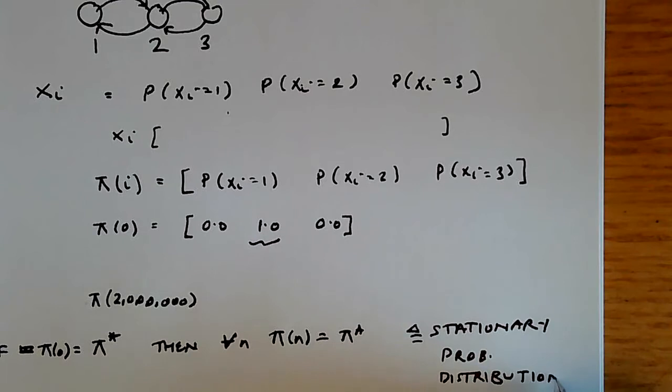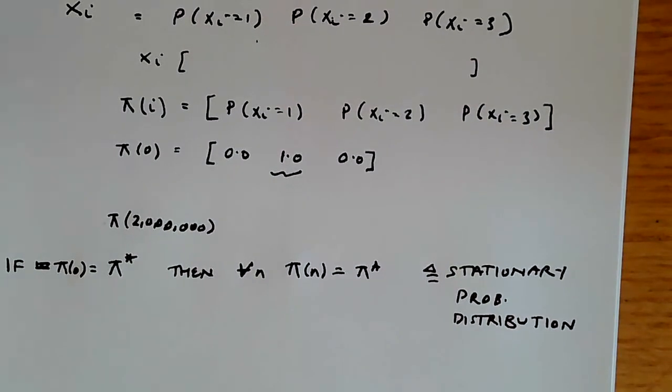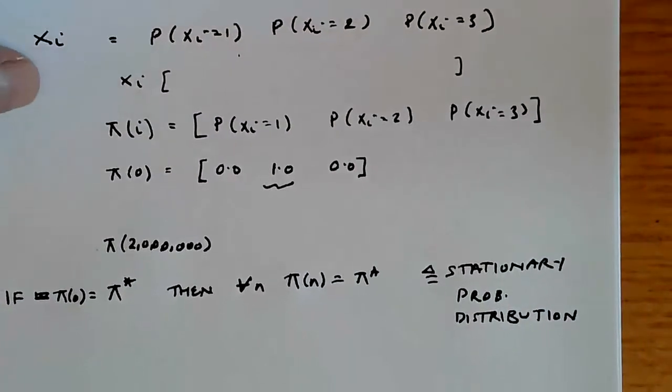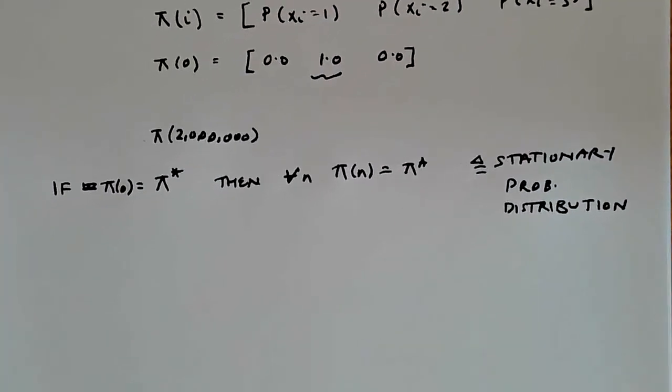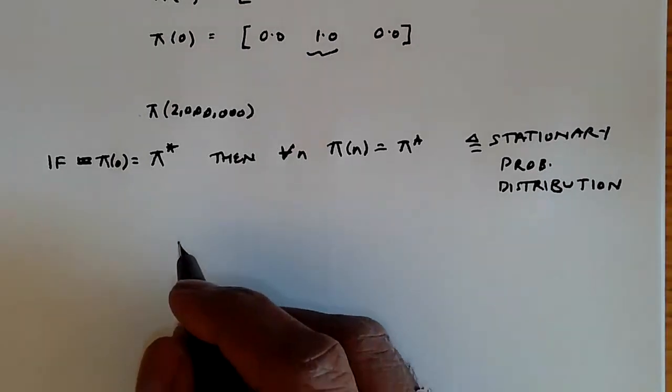So what you're saying is that if we start at π* initially, then we will continue to be in this state. And so what I'm going to show you is an example of a chain such that this is true. So let me draw this chain over here.